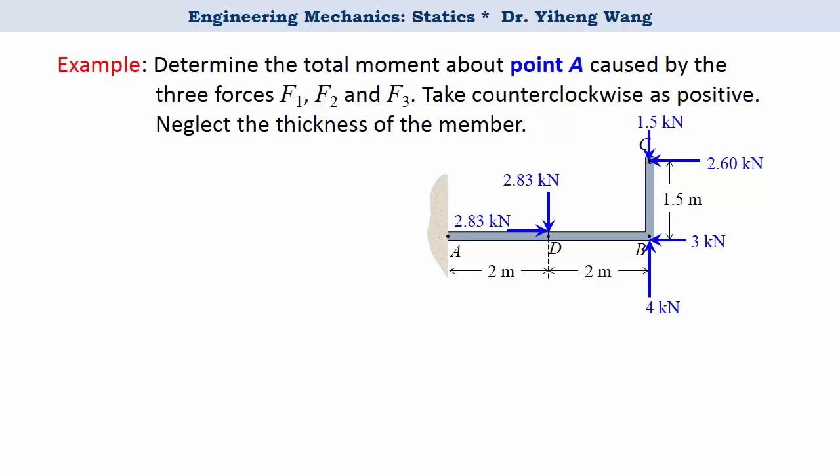Again from observation, we see that these two force components do not have moment about point A because their lines of action pass through point A. For the remaining four force components, their moment arms are easy to determine, therefore we can do the calculation and get to our answer.